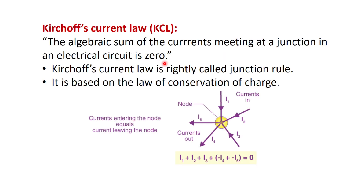We will start with Kirchhoff's current law, also known as KCL. It states that the algebraic sum of the currents meeting at a junction in an electric circuit is zero. KCL is rightly called the junction rule and it is based on the law of conservation of charge. In KCL, the current entering the node equals the current leaving the node.